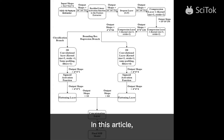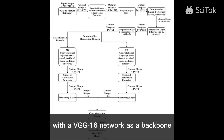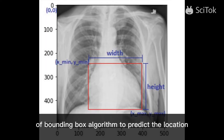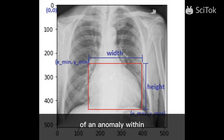In this article, we present a unique approach of SSD with a VGG16 network as a backbone for feature detection of a bounding box algorithm to predict the location of an anomaly within a chest x-ray image.